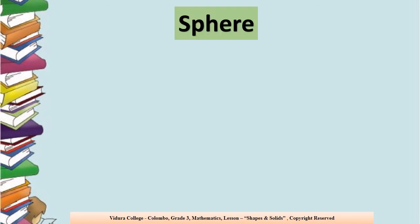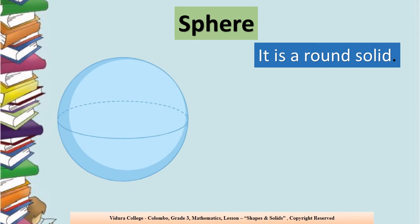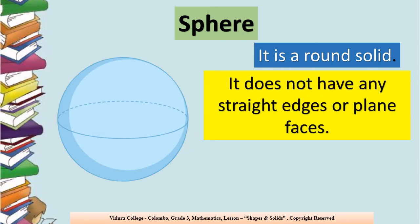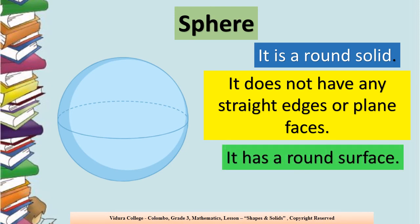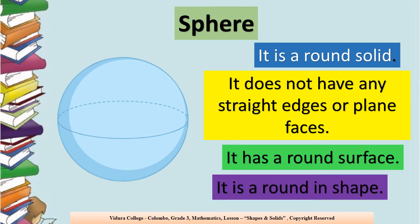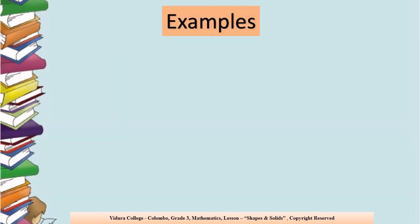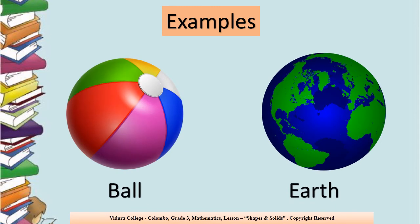Sphere. What is the next one? Sphere. It is a round solid — that means it is round in shape, not flat like a circle. It does not have any straight edges or plane faces. Can you see any plane faces here? No. It has a round surface. And it is round in shape. What are the examples for the sphere? Ball and the Earth — they are shaped like a sphere.